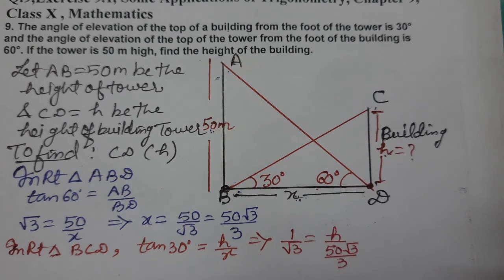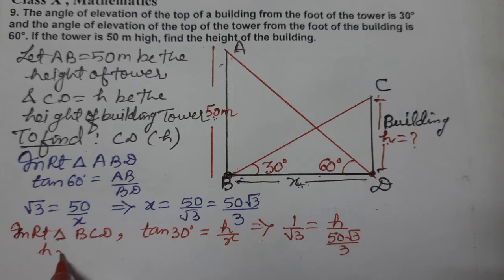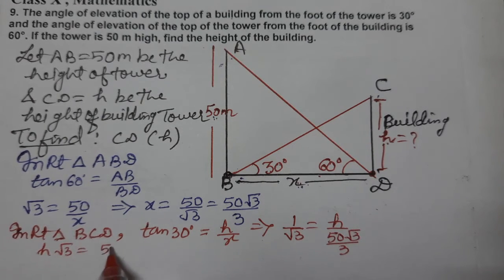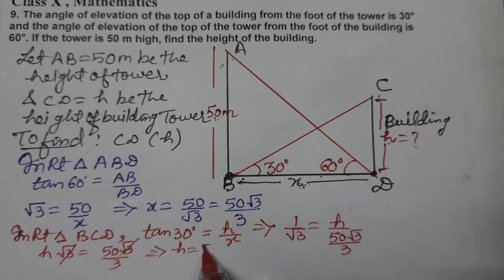Cross multiply karenge and we'll get the answer. Cross multiply karne par: h root 3 equals to 50 root 3 by 3. Root 3 root 3 cut, but h value 50 by 3.